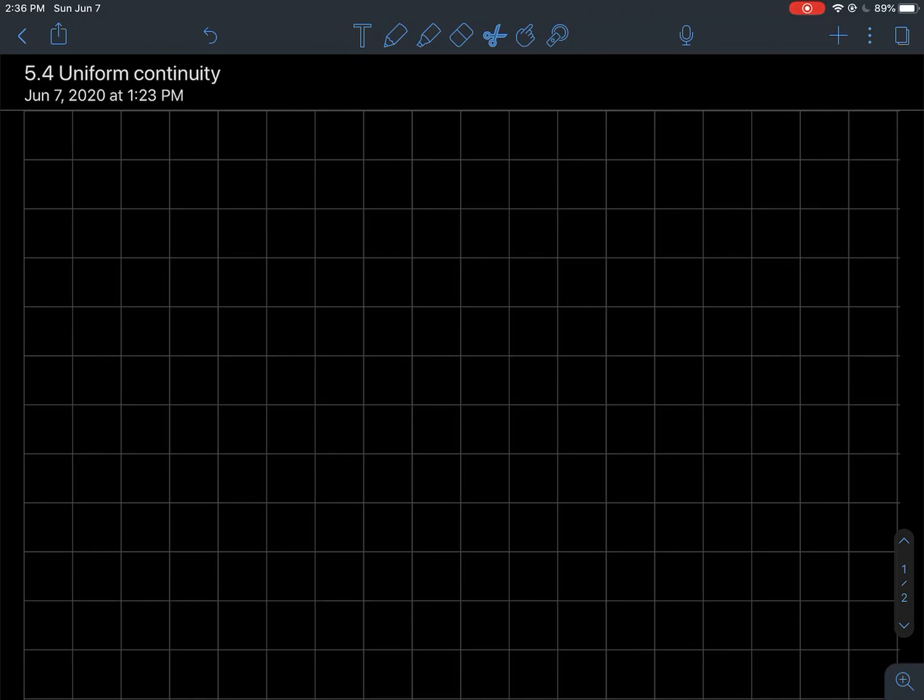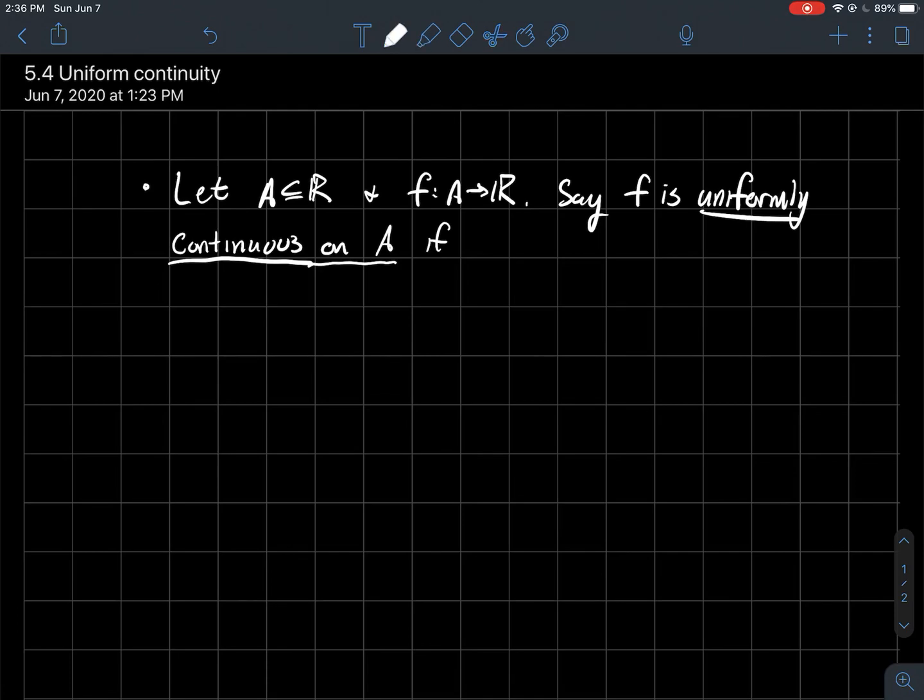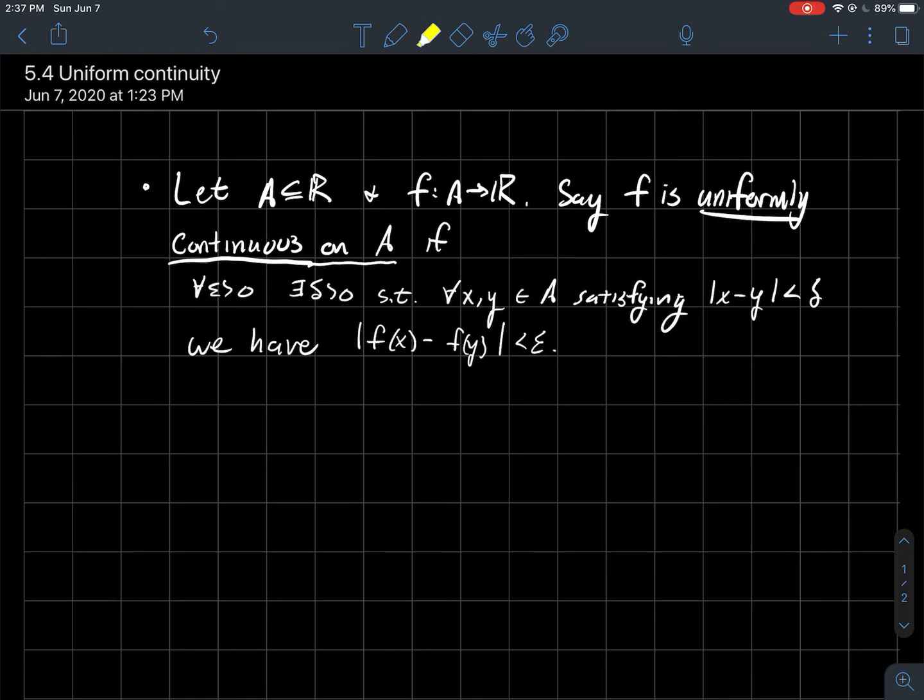This is a short video about uniformly continuous functions on a domain. So if A is a subset of the real line, and if f is a function whose domain is A, we're going to say that f is uniformly continuous on A if the following happens. So I'm about to give you another epsilon-delta type of definition.